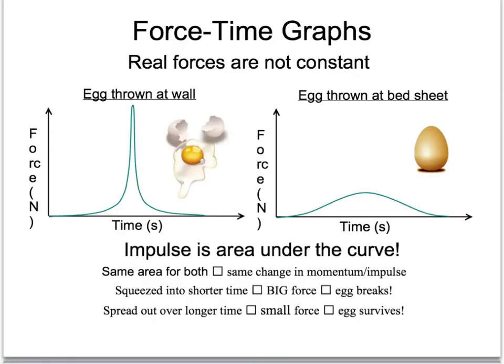This slide separates things out more cleanly than the real data — this is a drawing, whereas the last slide was real data. When you throw an egg at a wall, the egg gets a big force from that wall over a very small time. When you throw the egg at the bedsheet, the egg gets a small force spread out over a long time.